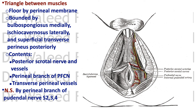There is a triangle formed between the muscles: the ischiocavernosus laterally, the superficial transverse perinei posteriorly, and the bulbospongiosus medially. The contents of this triangle are the posterior scrotal nerve and vessels — including the perineal branch of the posterior femoral cutaneous nerve, and the transverse perineal vessels and nerves. All muscles discussed are supplied by the perineal branch of the pudendal nerve, S2, S3, and S4. Remember this triangle and what traverses it — it is commonly examined.